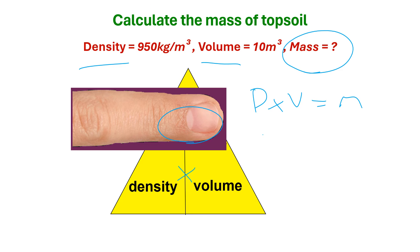Our density is 950. Our volume is 10. So therefore our answer is 9500 kilograms.